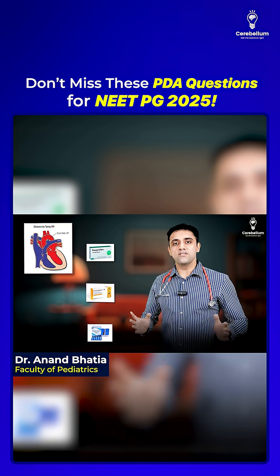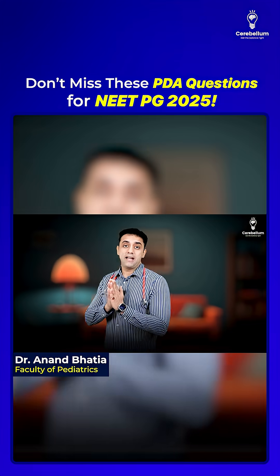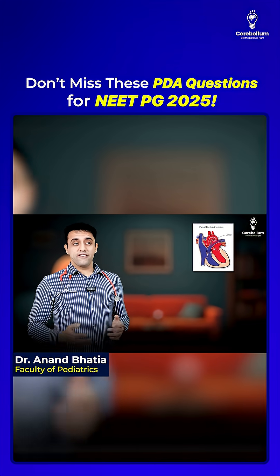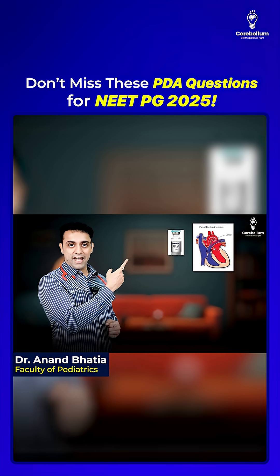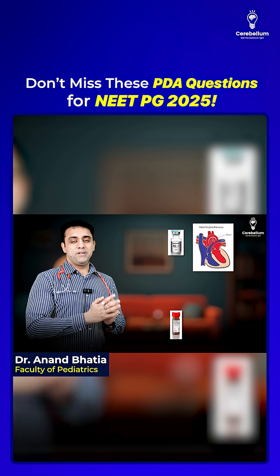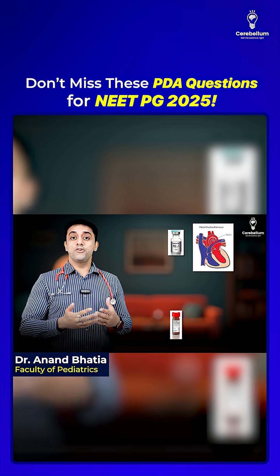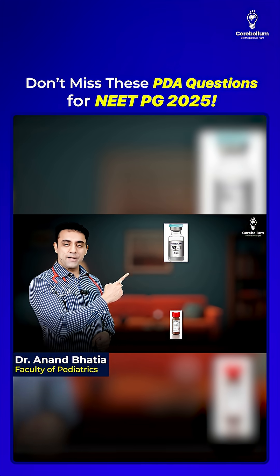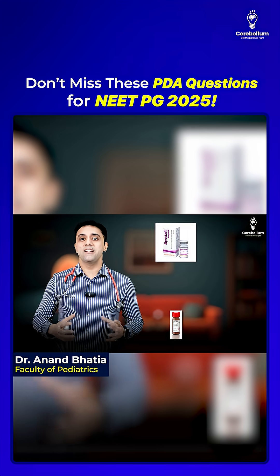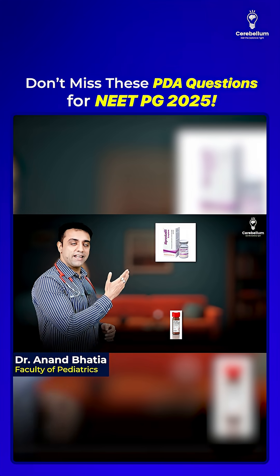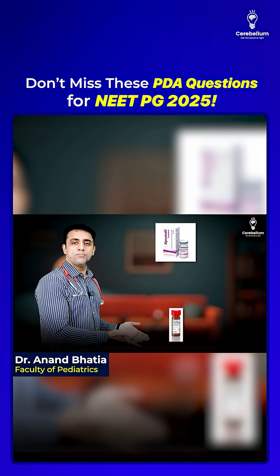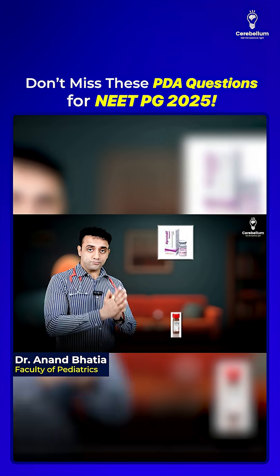Ibuprofen, indomethacin, and paracetamol — these three are the choices to close the PDA. If you want to keep the PDA open, you give a PGE1 analog. The drug is alprostadil.